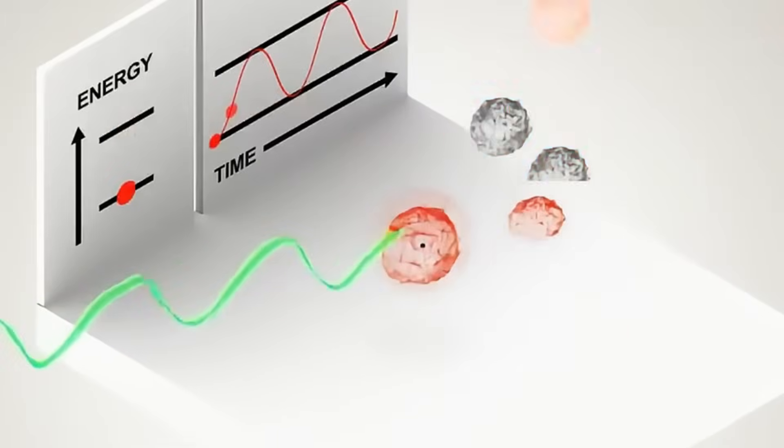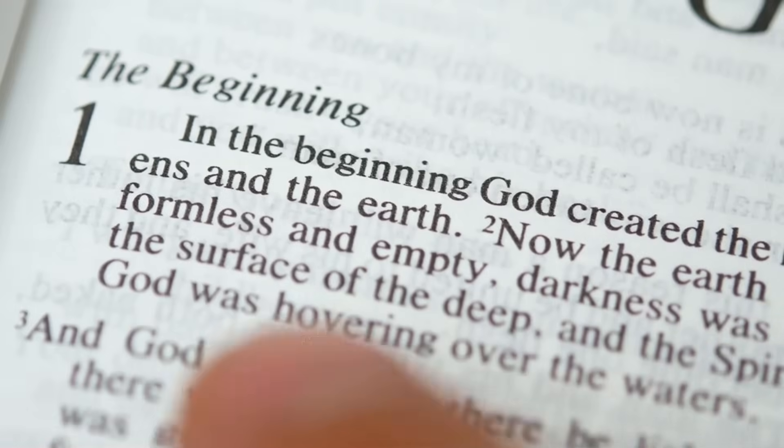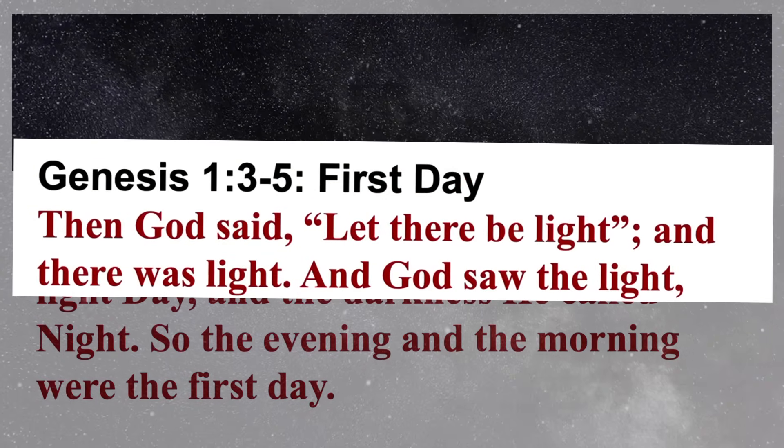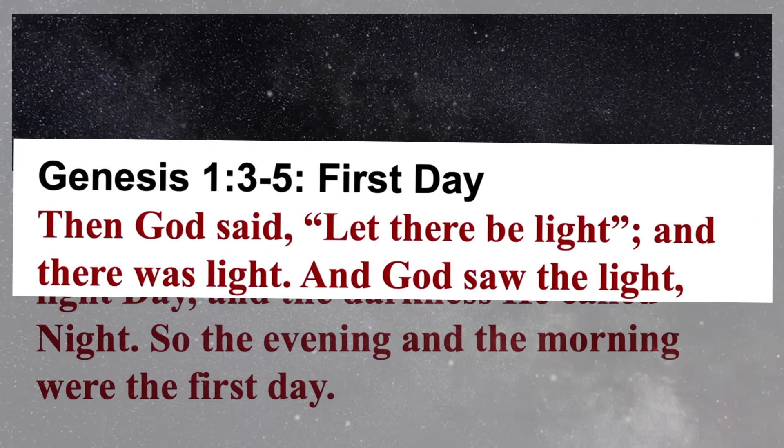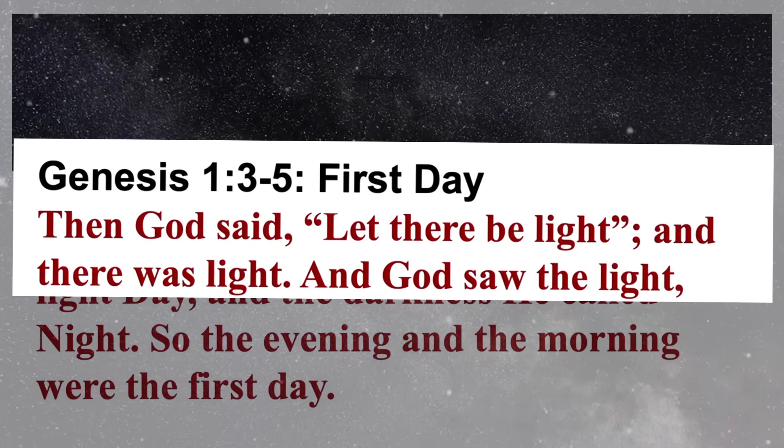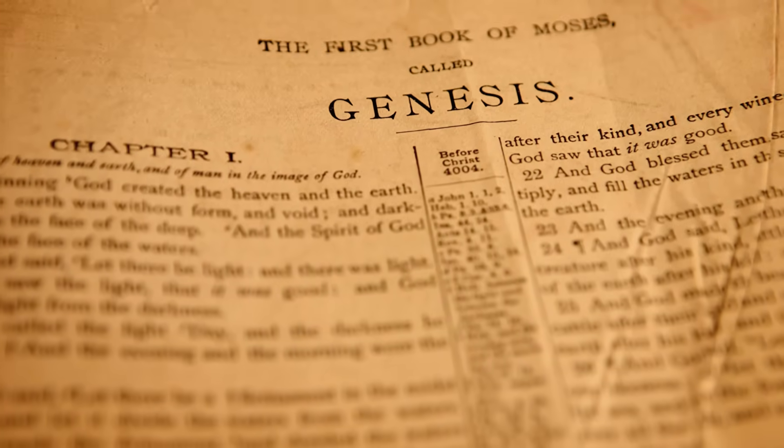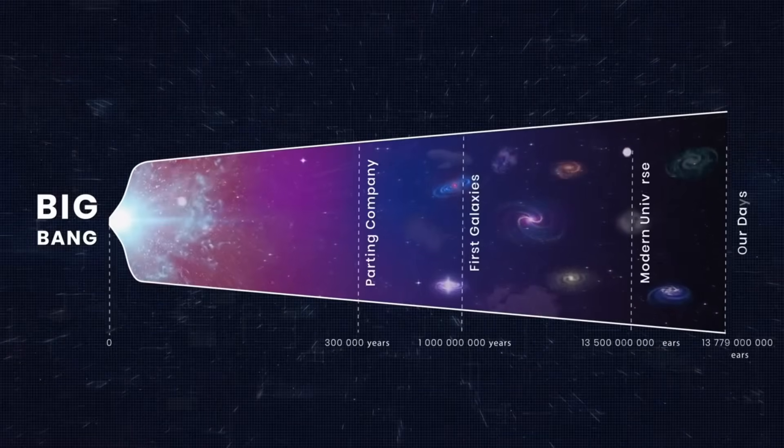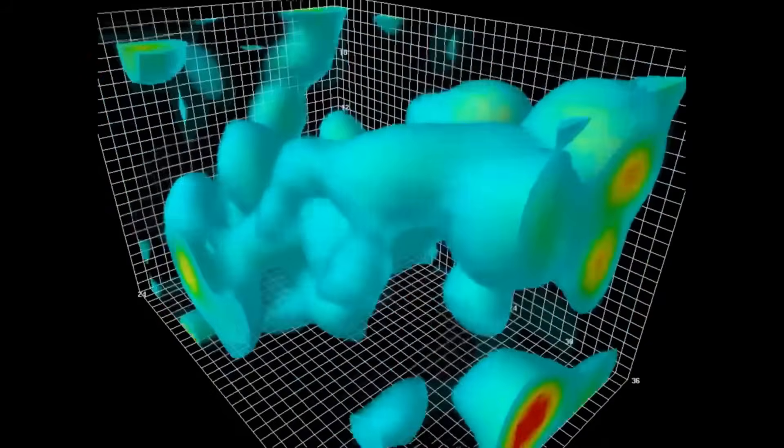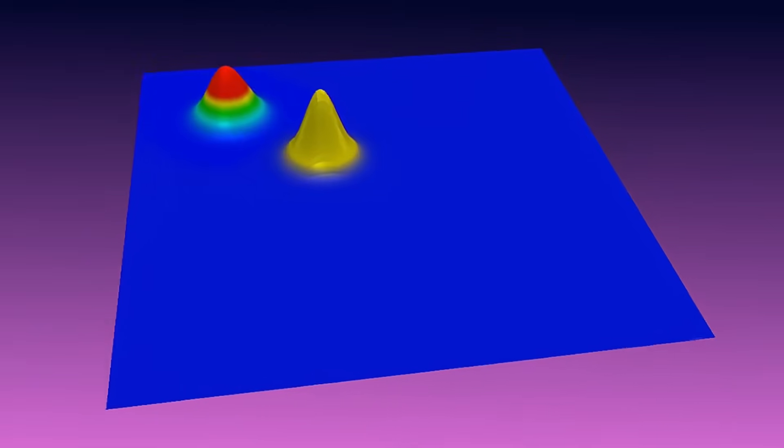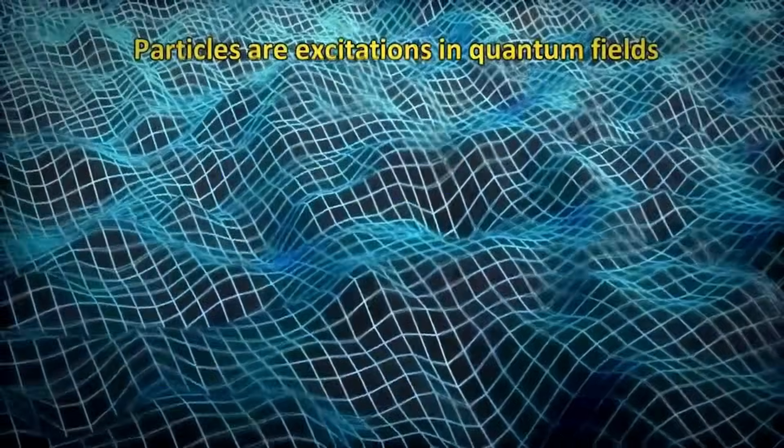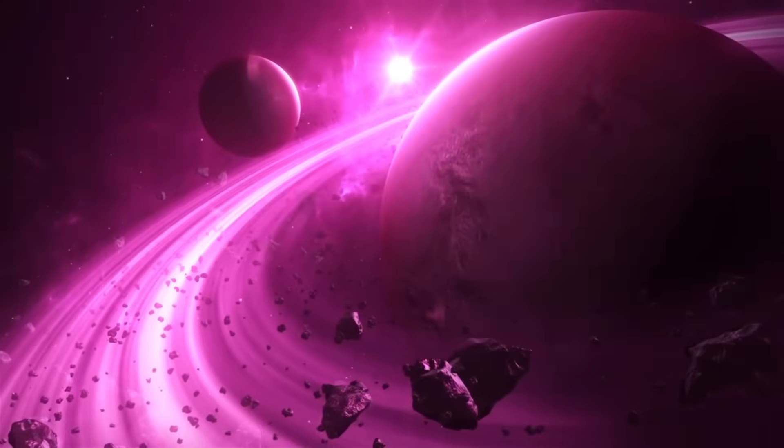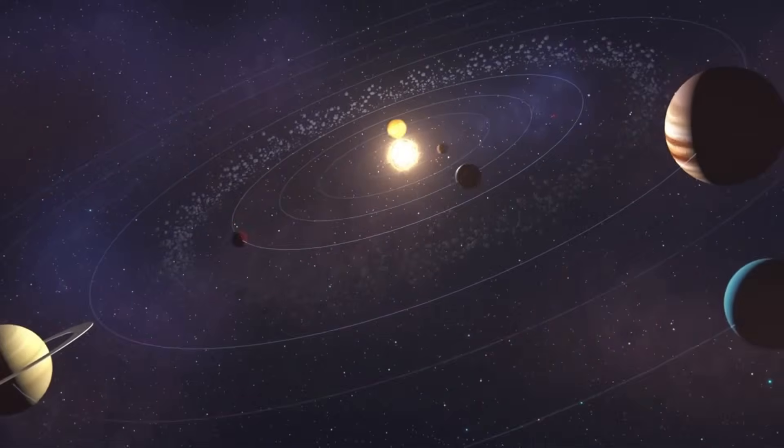Recent discoveries in quantum biology reveal coherence in photosynthesis and quantum entanglement in bird navigation, suggesting living systems exploit quantum effects. Scripture's portrayal of God breathing life into dust, Genesis 2:7, resonates with the idea of a quantum spark animating cells. If life's complexity depends on delicate quantum states, then the act of divine breath could symbolize the initiation of coherence within biological machinery, a poetic anticipation of life's hidden quantum engine.